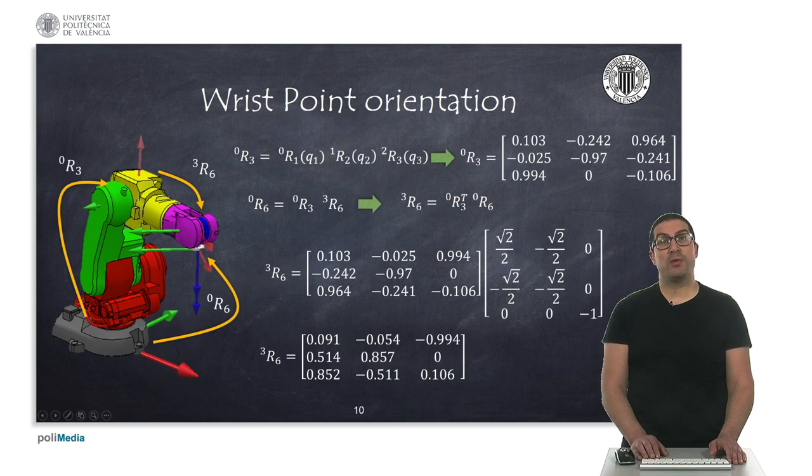Indeed, the rotation matrix R03 is a rotation matrix that we already know right now because we have already solved the values for the first three joints, and this rotation matrix depends on these three values. You just simply need to compute the Denavit-Hartenberg transformation matrices associated to each of the links for the corresponding joint values and get the rotational component. Also, the rotation matrix R06 is part of our problem statement datum.